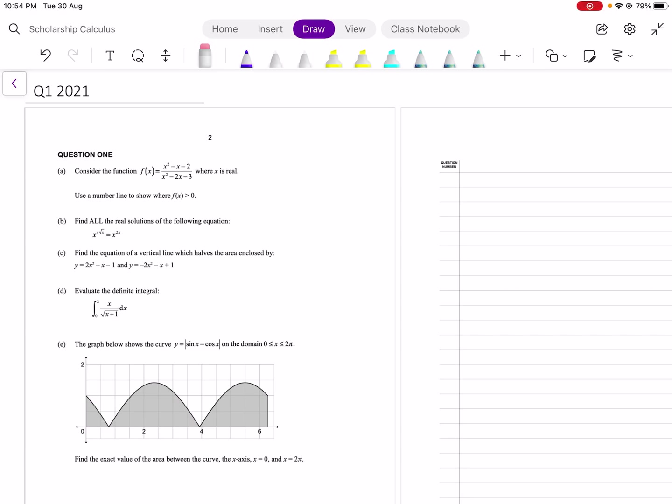Kia ora and welcome to this video on question 1 of the 2021 Scholarship Calculus exam. Question 1 generally in scholarship consists of easier problems. There's five parts to this question and so they're all fairly short problems. Each question is worth eight marks so there can't be too many marks for each of the sub-questions.